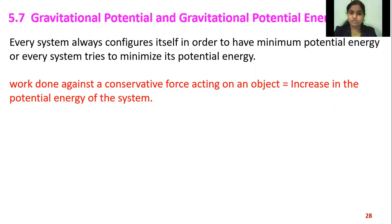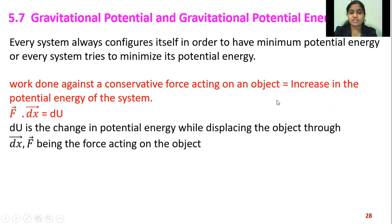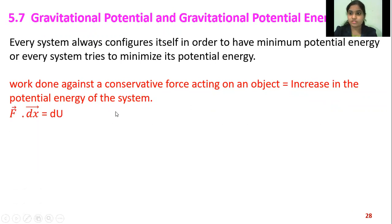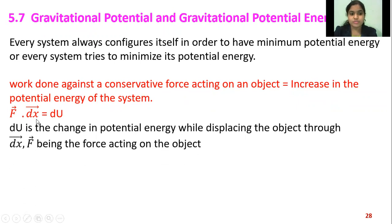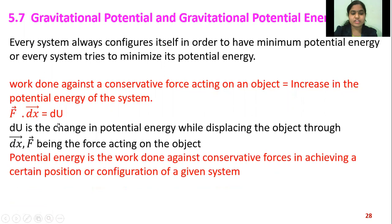Work done is force into displacement, represented as vector F dot vector dx, where vector F is the force acting on the object and vector dx is the displacement. The change in potential energy while displacing the object is given by du. So our formula becomes: change in potential energy du is equal to minus vector F dot vector dx.